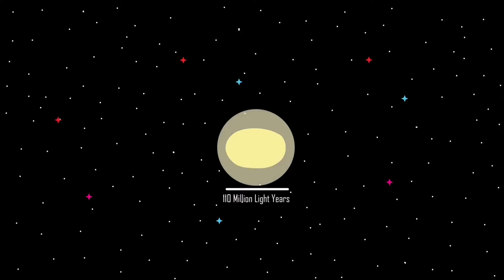On the outskirts of the Laniakea, we find the Virgo supercluster, stretching across at about 110 million light-years and containing more than a million galaxies.